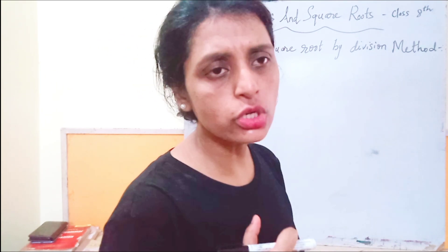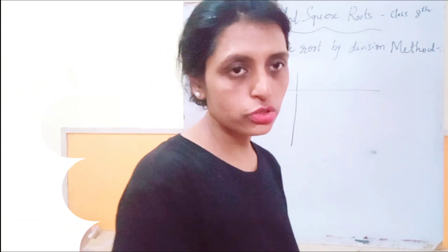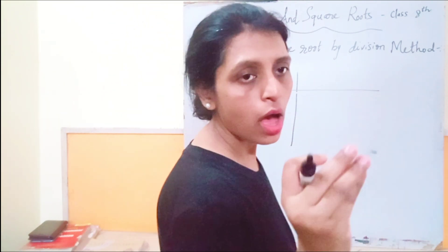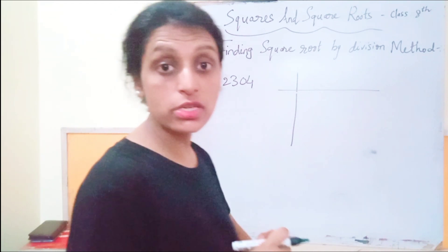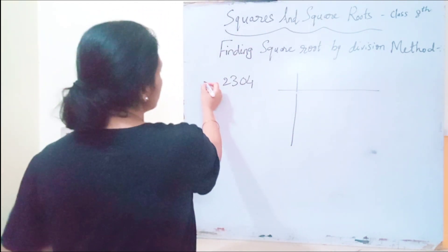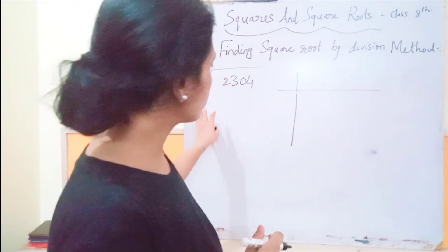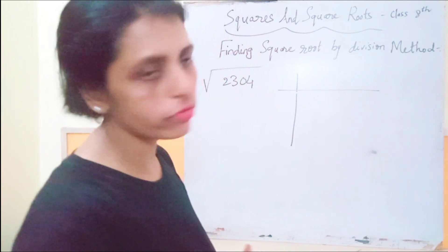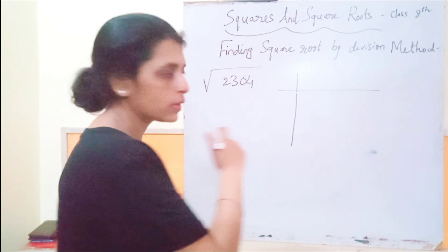It is a very quick and easier way to find the square root of bigger numbers. So step by step I'm going to tell you how to use this division method. Here the number is 2304 — we have to find the square root of 2304 by using the division method.